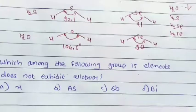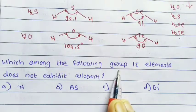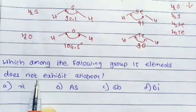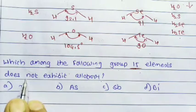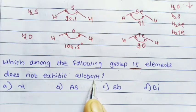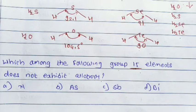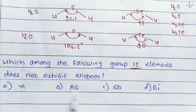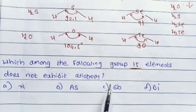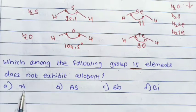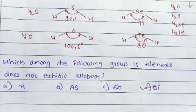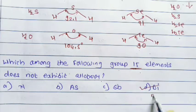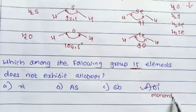Next question: which among the following group 15 elements does not exhibit allotropy? Allotropy means a single substance exhibiting different forms. Options: nitrogen, arsenic, antimony, and bismuth. Bismuth does not exhibit allotropy — it is a monatomic element.